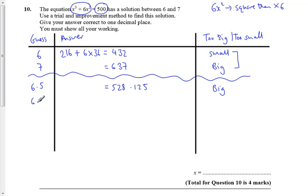6.4³ + 6 times 6.4² is 507.904. Again my answer is getting closer but it's still too big. I'm going to check and I'm only going one step at a time as I'm going down here. I'm not jumping answers, I'm going one step at a time.